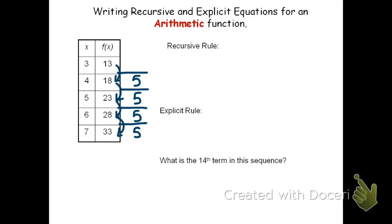To write the recursive rule, we start by defining the beginning term. In this case, our table began when x was 3, so we would say f of 3 equals 13. The rest of the recursive rule talks about how any term, we'll call that f of x, relates to the previous term, which we'll call f of x minus 1.